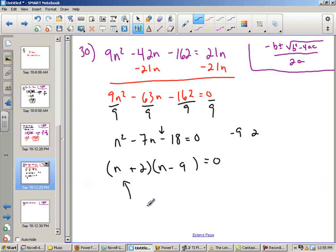The last step is to say, what would I plug in for n in both cases to make each parentheses 0? So if I plugged in a negative 2, negative 2 plus 2 is 0. So n could equal negative 2 or n could equal positive 9. You'll notice in the section from 27 through 30, those four problems, that they all turn out as nice, round numbers like that.